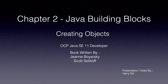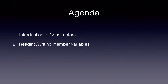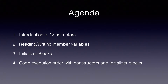Hello everyone, this is Harik Il and in this video we are going to look into chapter 2 which is Java Building Blocks of the book OCP Java SE 11 Complete Study Guide. We will be covering the very first subtopic which is creating objects. The agenda for this session: we will look into the introduction of constructors, how to read and write member variables, initializer blocks, and code execution order with the constructor and initialization block.